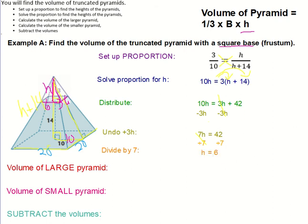If I want to find the height of the other pyramid, I'm just going to add 14. So h plus 14 would be 6 plus 14, which is 20. So the height of the other pyramid would be 20. Now let's find the volumes. We're going to find the volume of each pyramid, the large one and the small one, and then subtract them. That would give us the volume of the truncated pyramid.